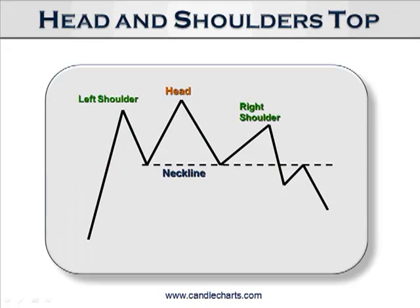So, the head and shoulders — refresh your memory. The market rallies, pulls back, rallies again. The middle rally is higher than the first rally and rally peak. Then the market descends and rallies again and stalls. The middle part is called the head. The head is higher than the two peaks — left shoulder, head, right shoulder. And when you connect the lows — not just the lows of the real body, but the lows of the session, the bottom of the lower shadows — you have what's called the neckline.